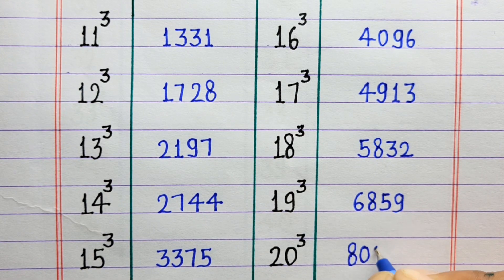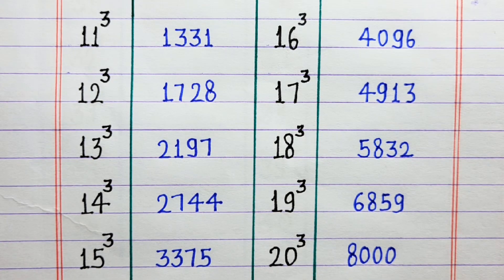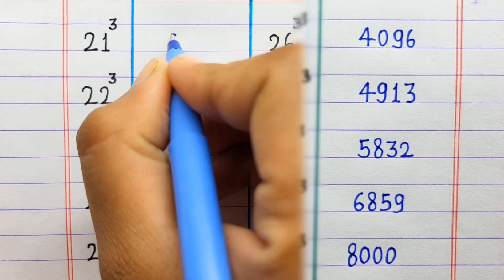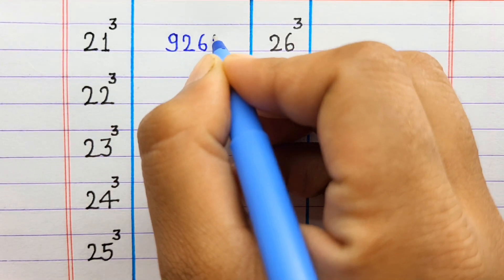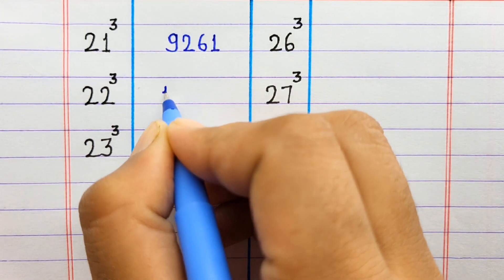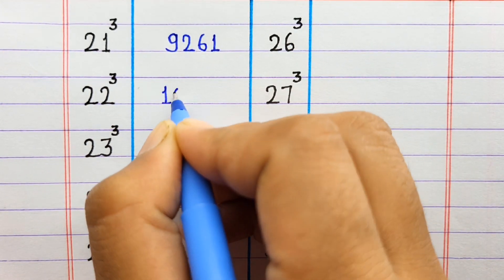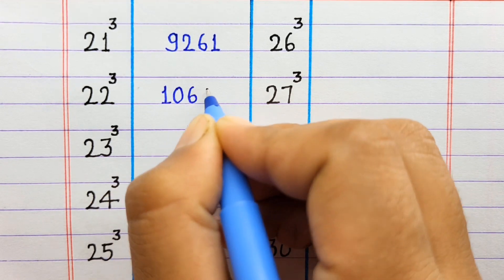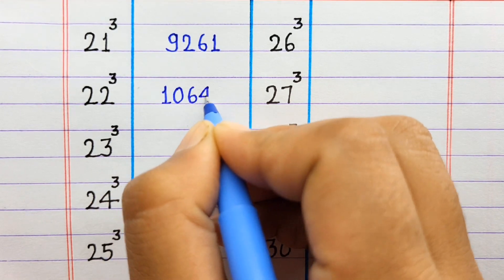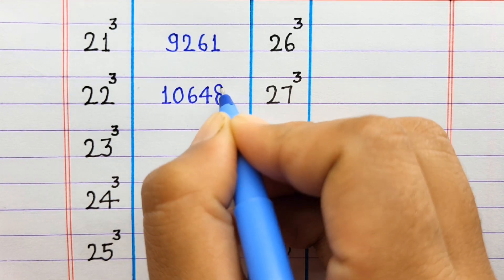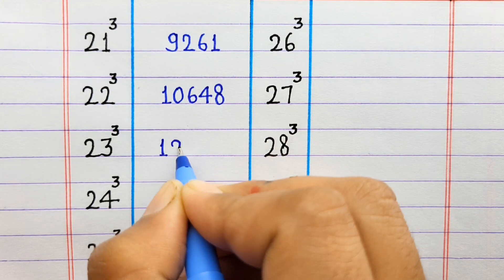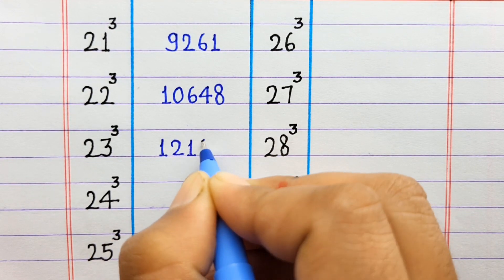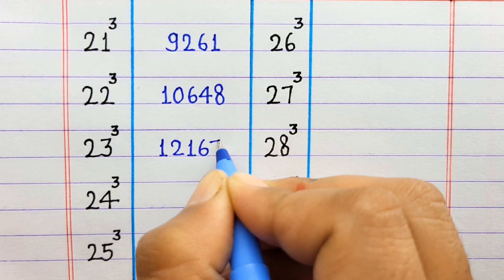20 ka cube 8000. 21 ka cube 9261. 22 ka cube 10,648. 23 ka cube 12,167.